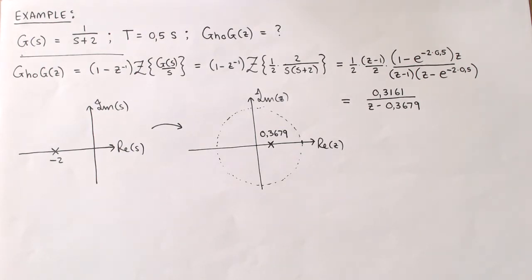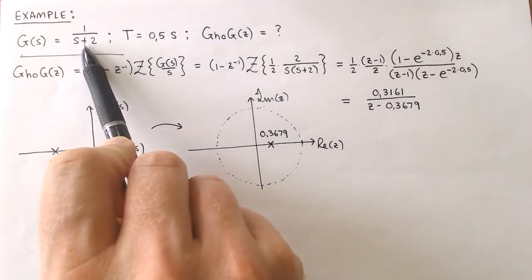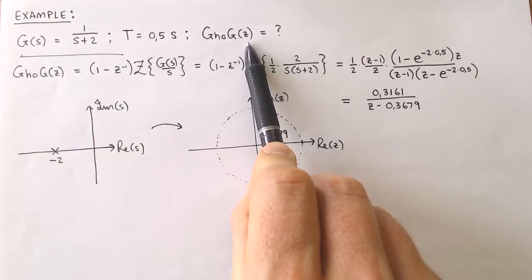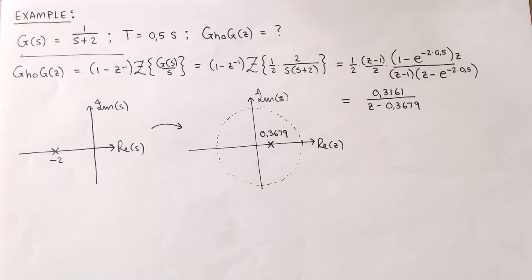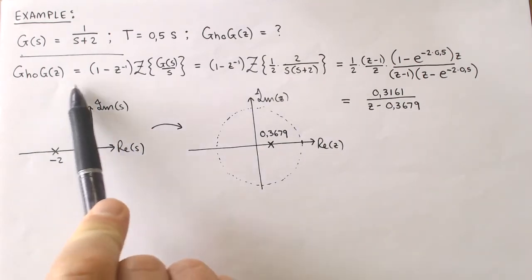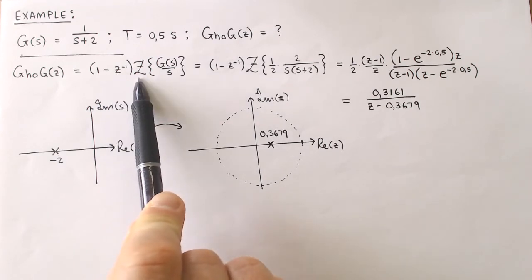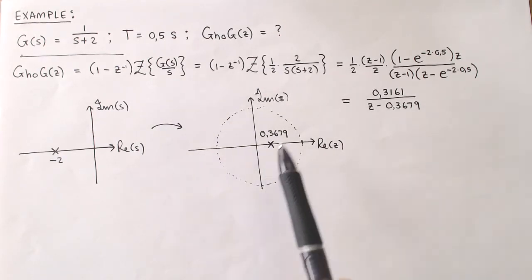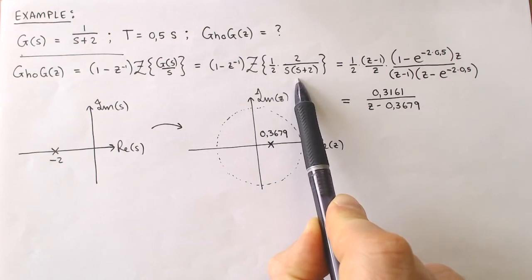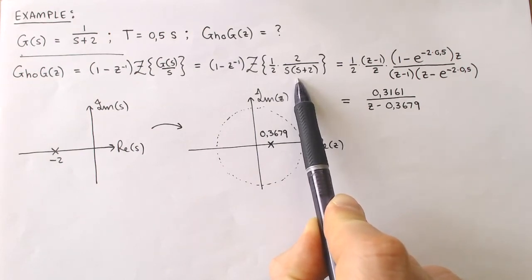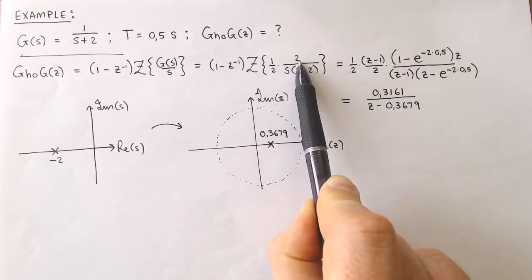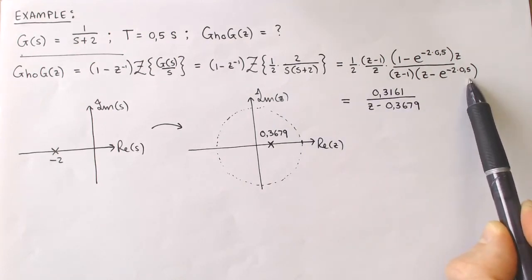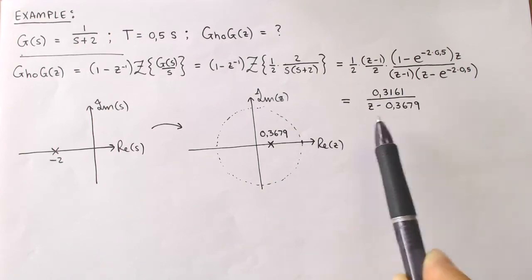Suppose the continuous plant is given by 1/(s + 2) and the sampling period is 0.5 seconds. We wish to determine the equivalent discrete plant model. From the derivation, the equivalent discrete plant is given by (1 − Z^(−1)) times the Z-transform of G(s)/s. G(s)/s is given by 1/(s(s + 2)), and we can write the 1 as one-half times 2. We then use the Laplace and Z-transform tables to find the transfer function and, after some manipulation, write it in standard format.